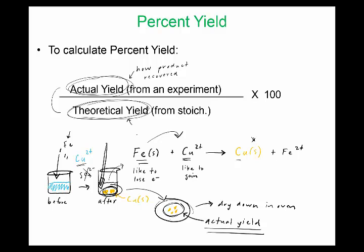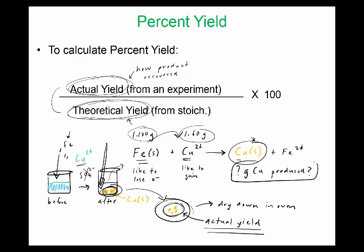This copper when it's all dried down is our actual yield—what we actually got in the experiment. We're going to compare this number to what we get by doing paper and pencil, by doing a mole-to-mole problem and a limiting reactant problem. In the lab we'll be starting with 1.100 grams of iron and 1.60 grams of copper. Since you're given starting amounts of both, you find the limiting reactant and determine the amount of copper produced. You want to find out how many grams of copper are produced. When we solve this question, that will be our theoretical yield.